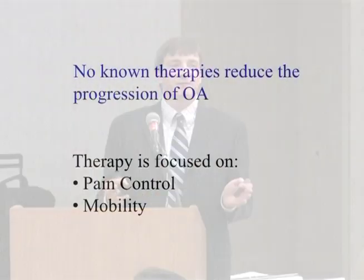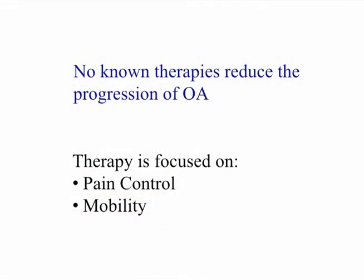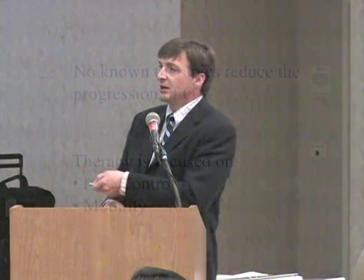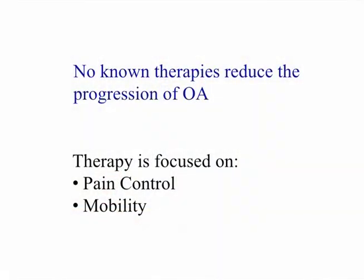Today in 2009, there are no disease-modifying therapies for osteoarthritis. Our therapy is based primarily on pain control. We give patients acetaminophen, Tylenol, or non-steroidal anti-inflammatory drugs like Motrin or ibuprofen. But none of these drugs alter the course of disease — we're basically controlling pain. We also do physical therapy and other adjunct measures to try and maintain mobility. Ultimately, when pain or inhibited mobility becomes intolerable, patients are referred to orthopedics for joint replacement.